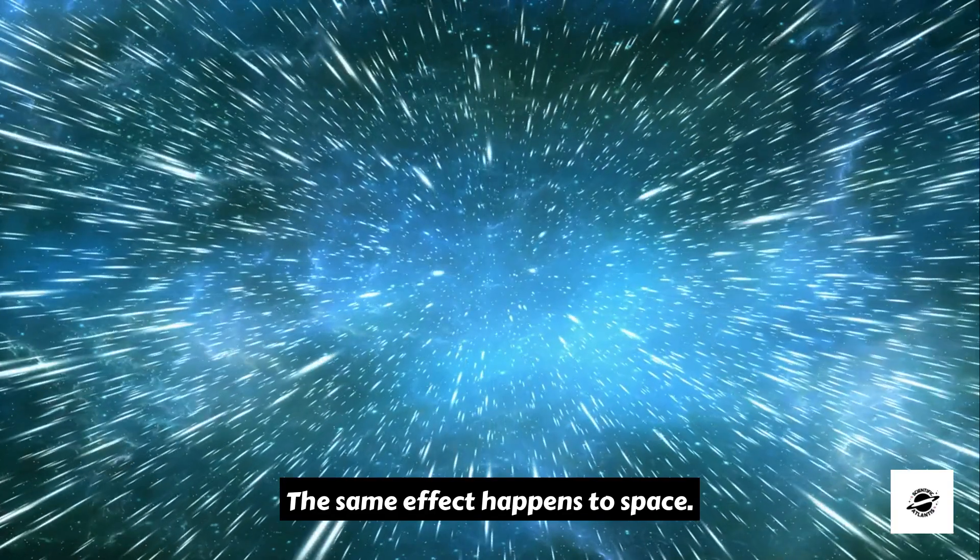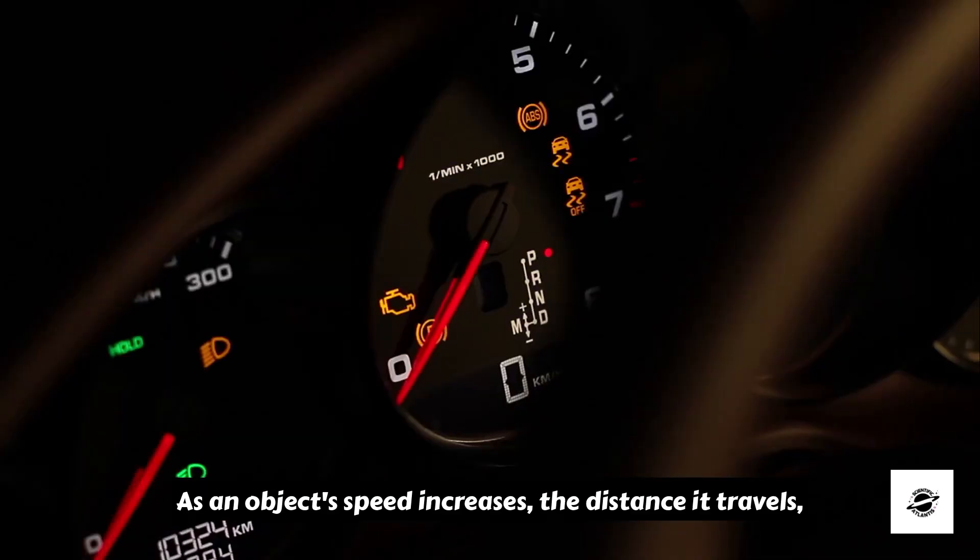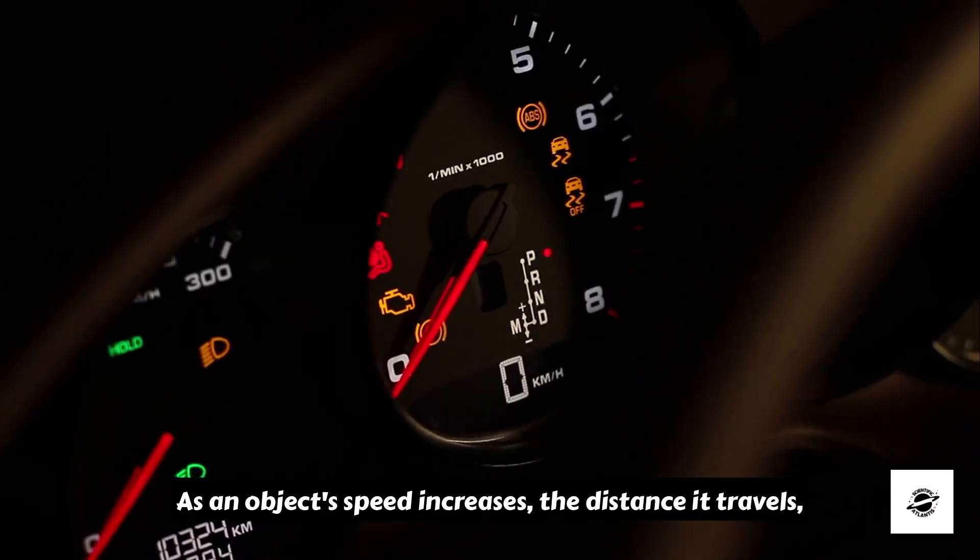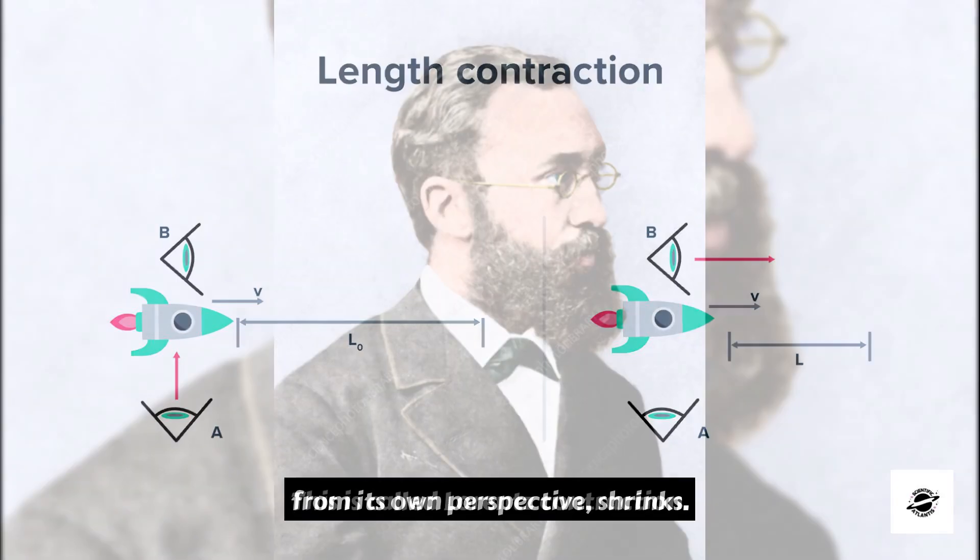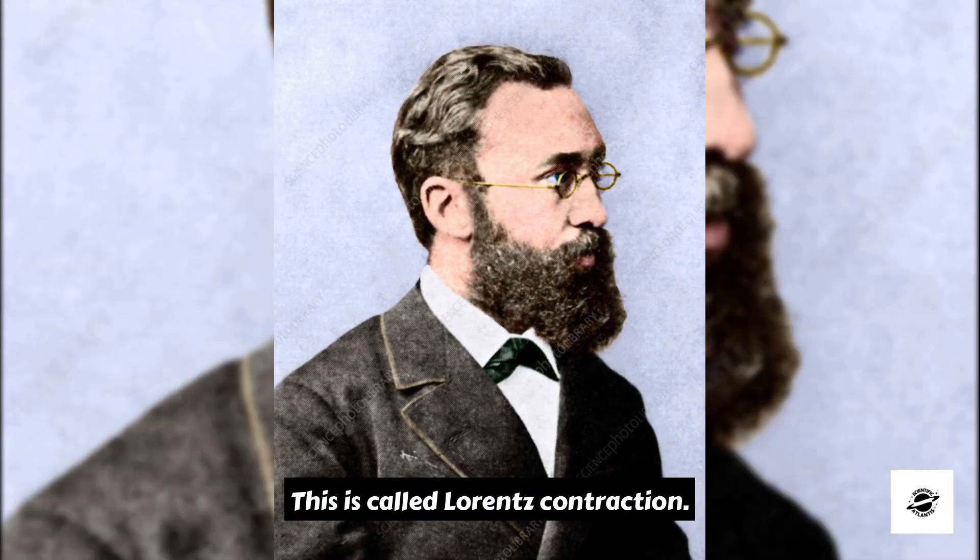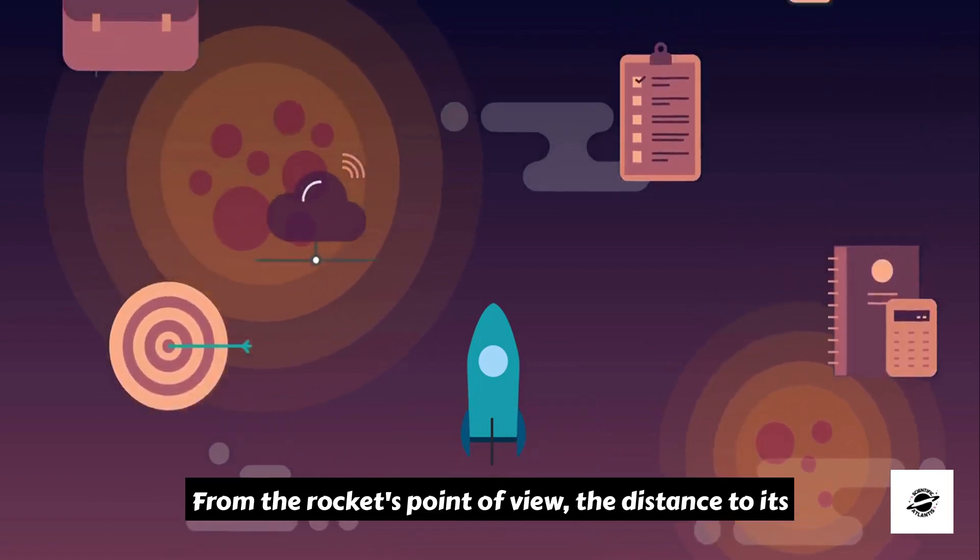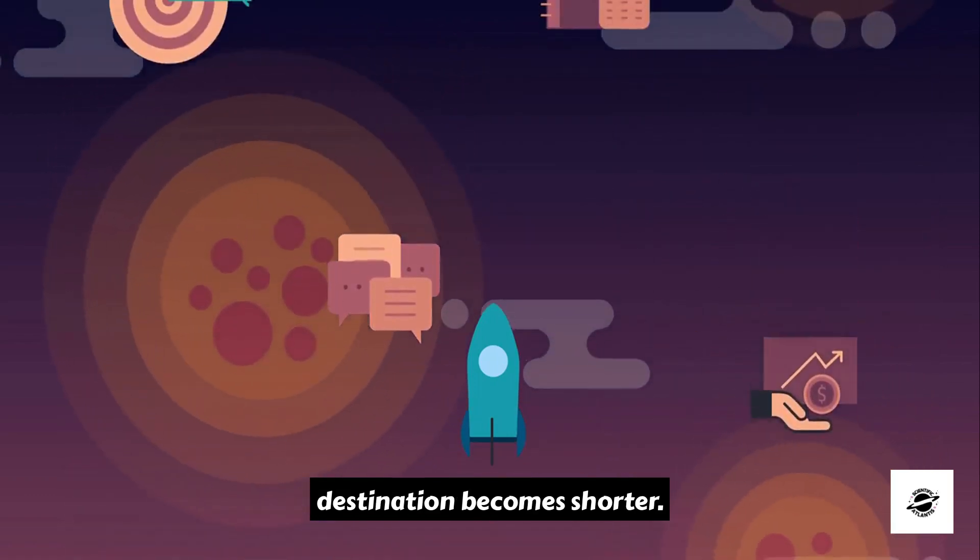The same effect happens to space. As an object's speed increases, the distance it travels from its own perspective shrinks. This is called Lorentz contraction. From the rocket's point of view, the distance to its destination becomes shorter.